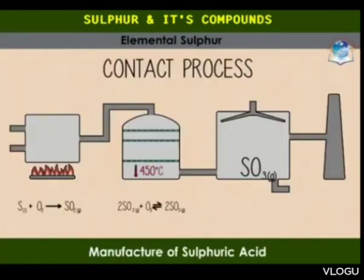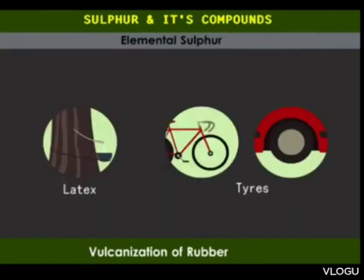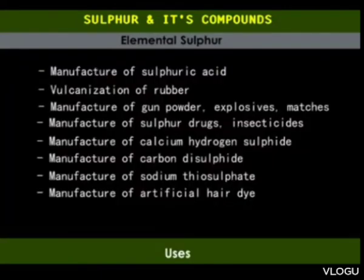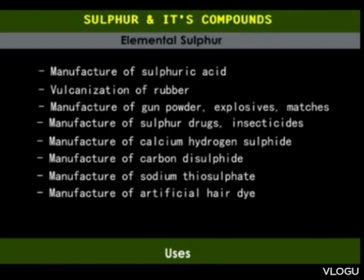Sulfur is used in the manufacture of sulfuric acid, which has a large variety of industrial uses. Vulcanization of rubber, that is hardening of rubber to a tough substance used to make tires. Manufacture of gunpowder, explosives, matches and fireworks. Manufacture of sulfa drugs, insecticides and fungicides. Manufacture of calcium hydrogen sulfide for bleaching wood pulp. Manufacture of carbon disulfide. Manufacture of sodium thiosulfate used in photography, and manufacture of artificial hair dyes.